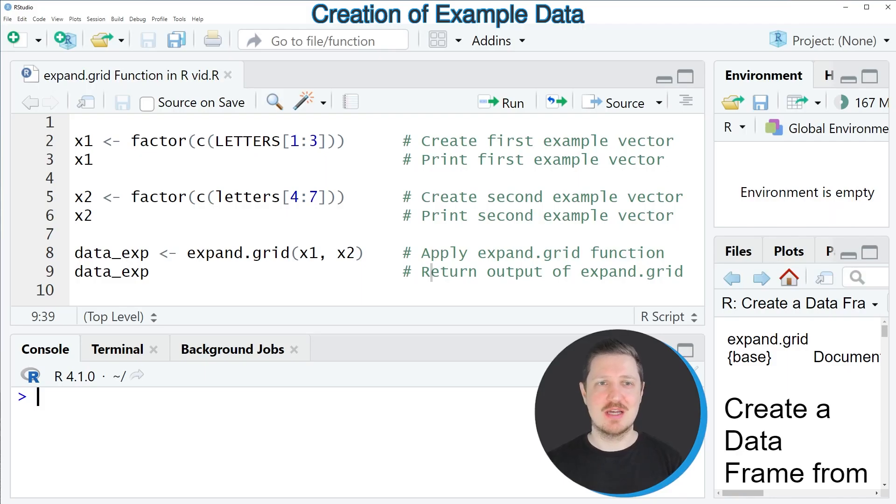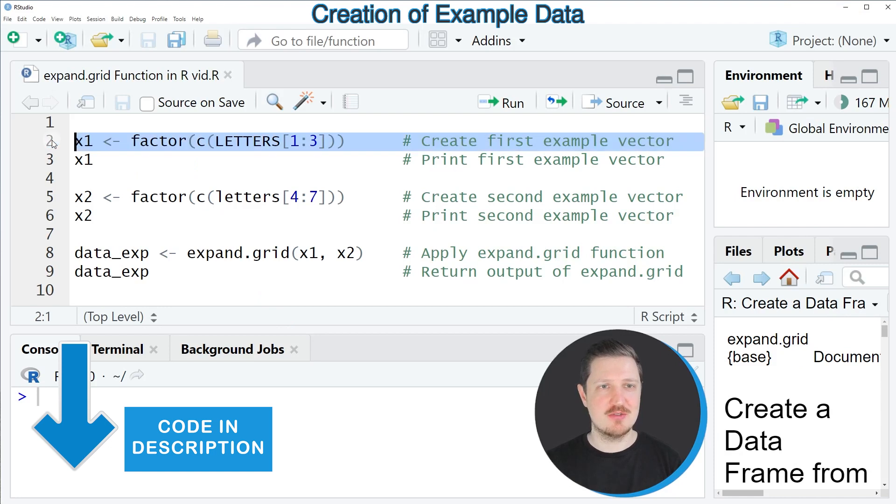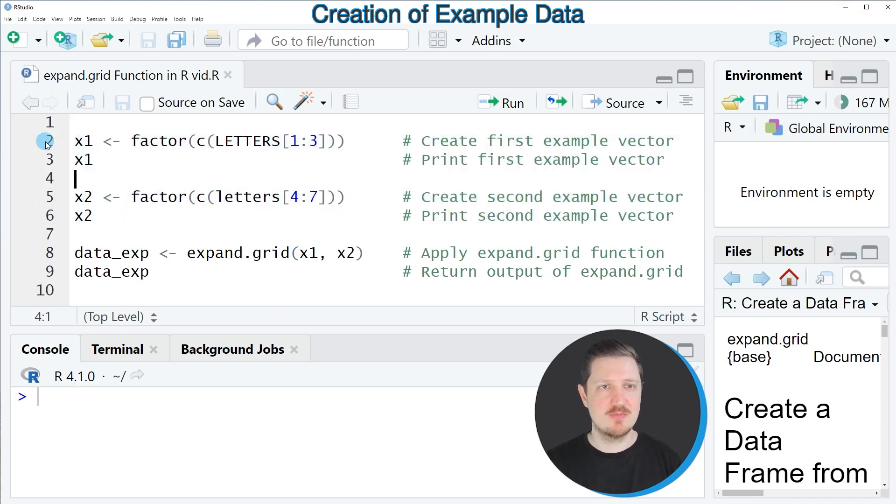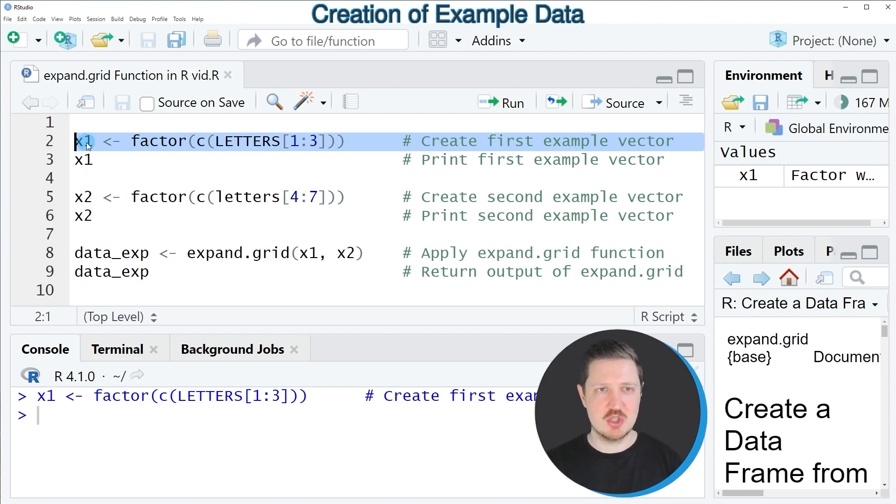In this video I will show you an example, and for this example we first need to create two data objects as you can see in lines 2 to 6 of the code. So in line 2 of the code I'm creating our first example data object which is called x1.